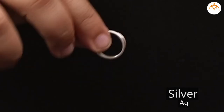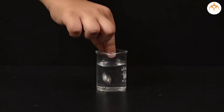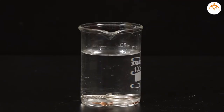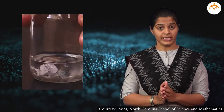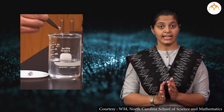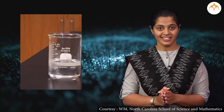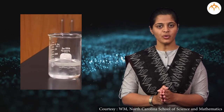Let us take these metallic objects and put them in water — what happens? Yes, all these items of iron, silver, and copper sink in water. Now let's take sodium, which is also a metal, and add it to water. Wow, isn't that amazing? It's floating! Why does it happen?